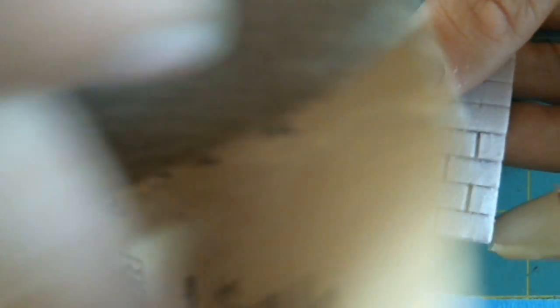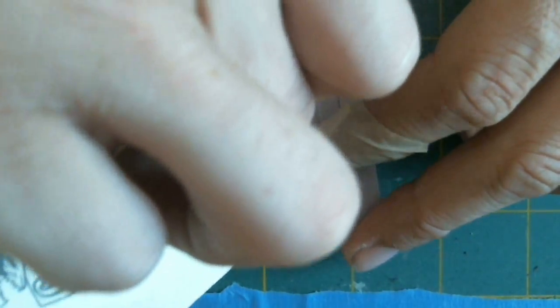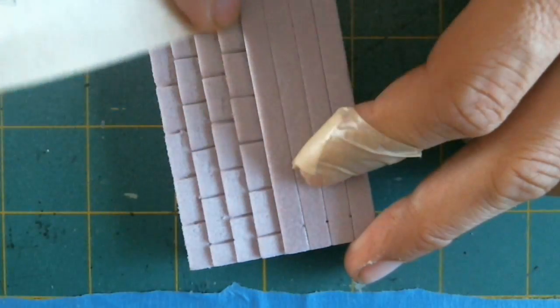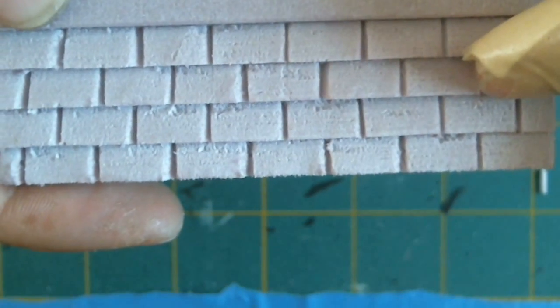And the next thing I do is I'll get some 100 grit sandpaper and just gently run it across there. And when you do that, as you can see, it gives this a nice little texture for dry brushing. Great texture.